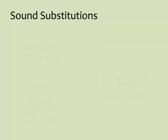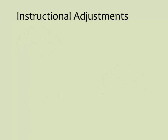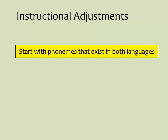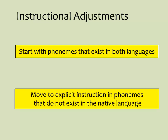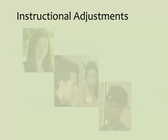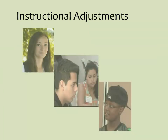It is important to talk to students about the fact that the human mouth can produce and the human ear can perceive many different sounds, but that each language only uses some of them. Pronunciation errors do not indicate a lack of understanding or knowledge. It is helpful to explicitly teach students how to transfer what they know in their home language into English. Start with phonemes that exist in both languages — for example, M and S are similar sounds in English and Finnish. Then move to explicit instruction in phonemes that do not exist in the native language — for example, in Finnish, TH and SH do not exist. Bilingual learners will likely need to hear and practice sounds that are new to them.